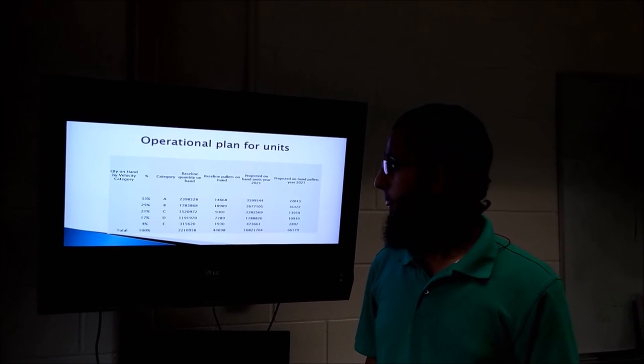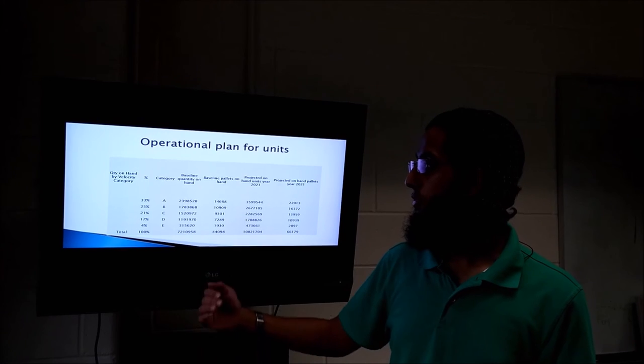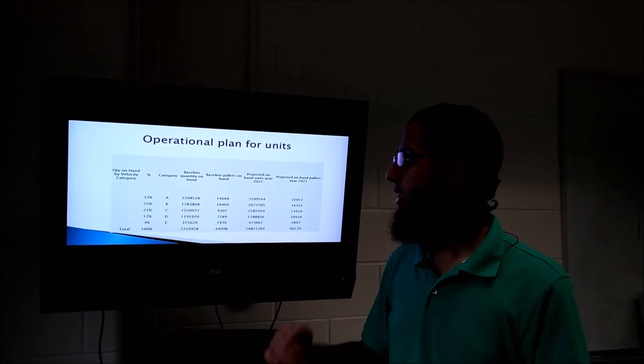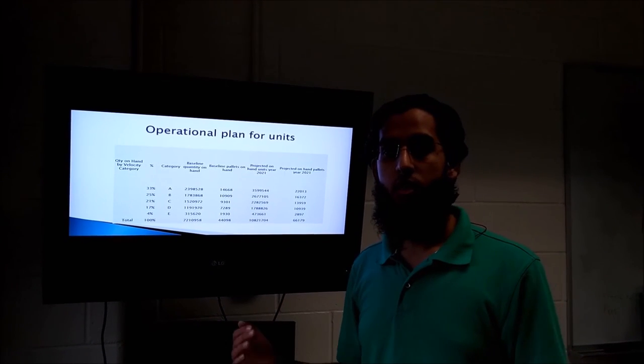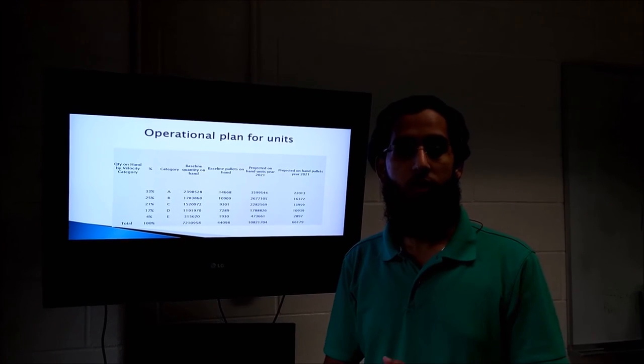This is the velocity that we were given for the different A, B, C, D, and E categories. This is the data that we have used to divide the racks.